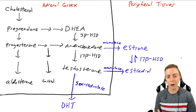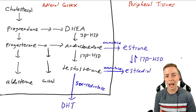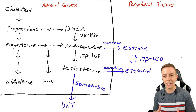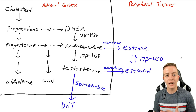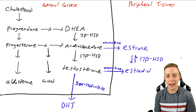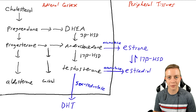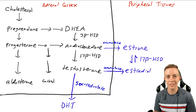In the next video we are probably going to be talking about the ovaries and how we produce estrogen there. I hope everything is cleared up about peripheral aromatization. Please leave your questions and comments below, like this video, subscribe to my channel, and I will see you all in the next one.